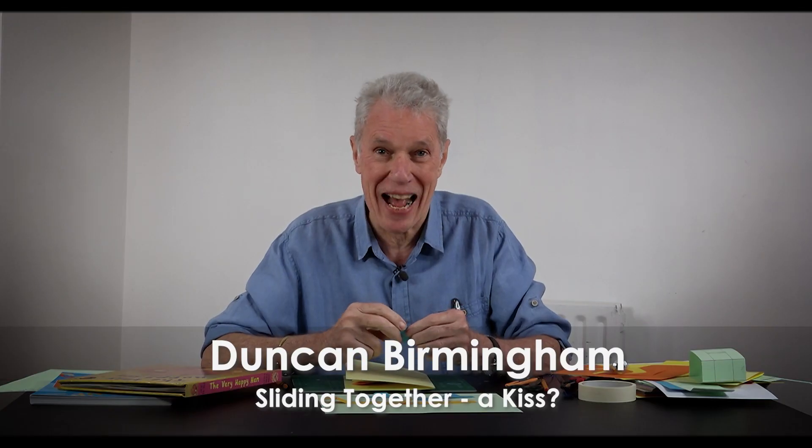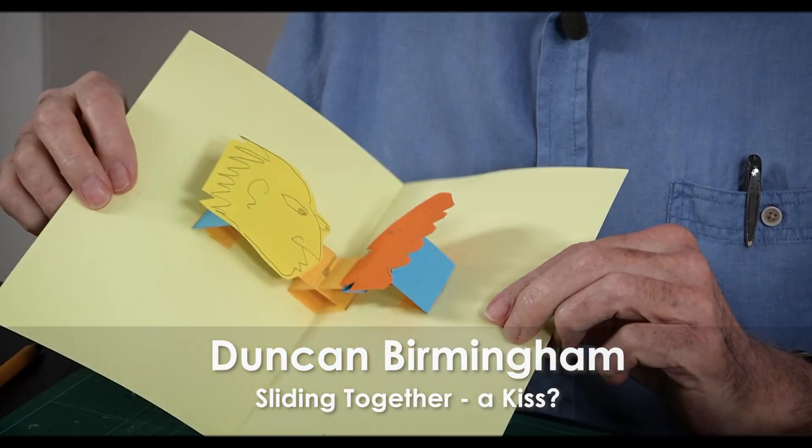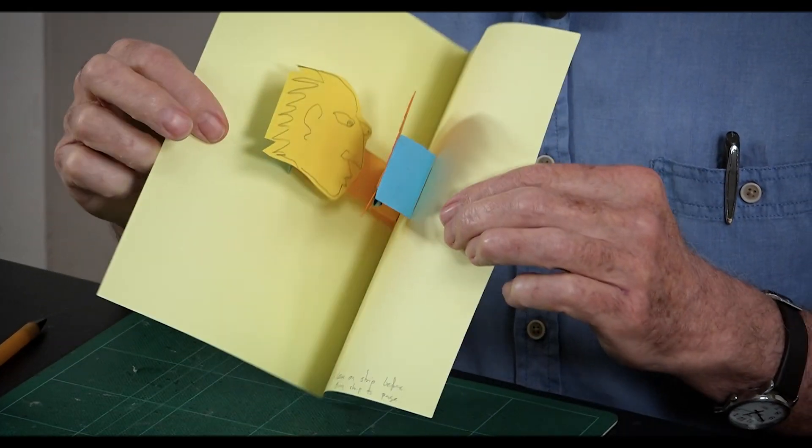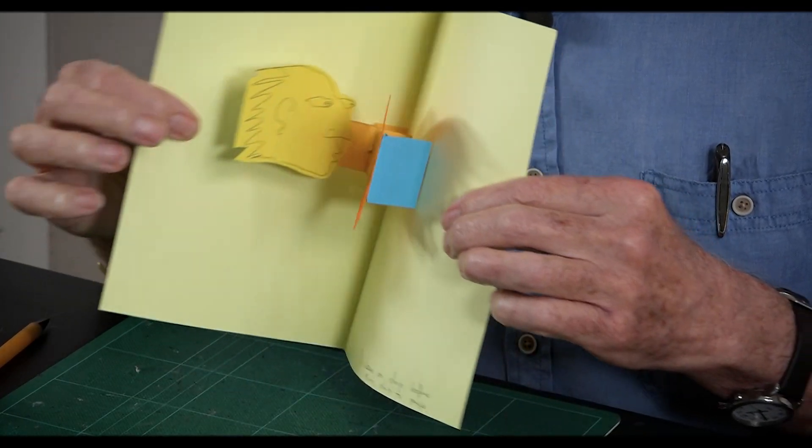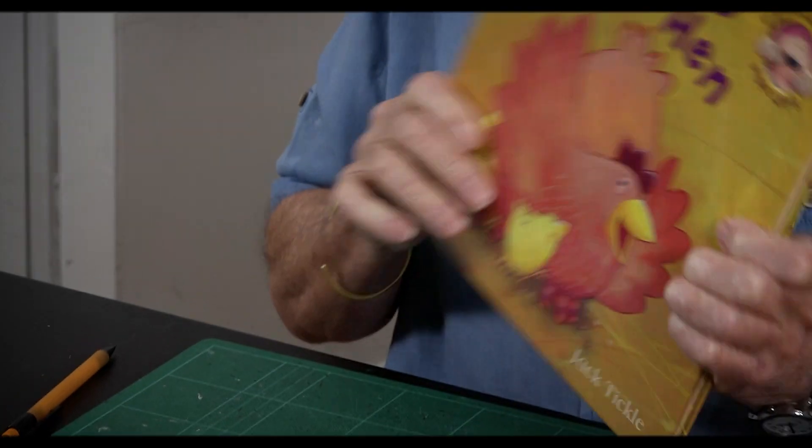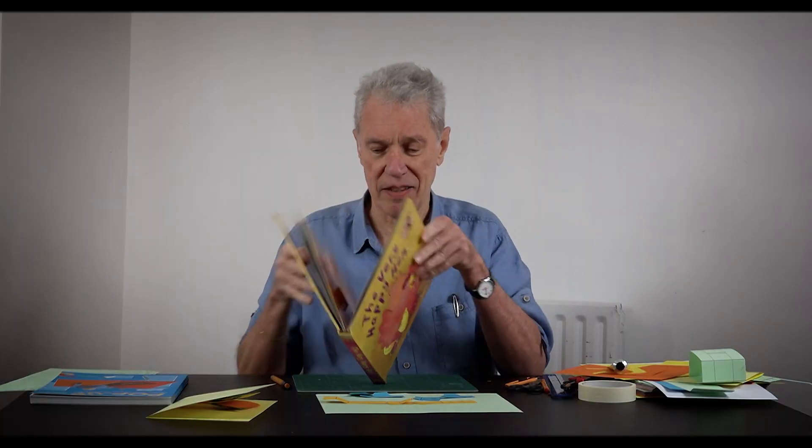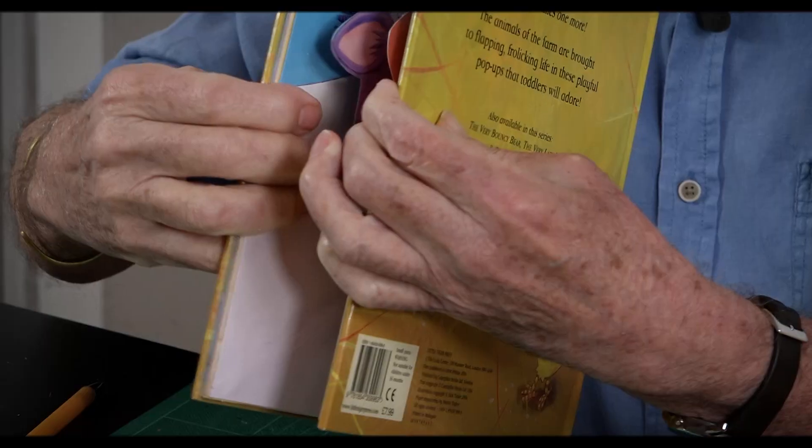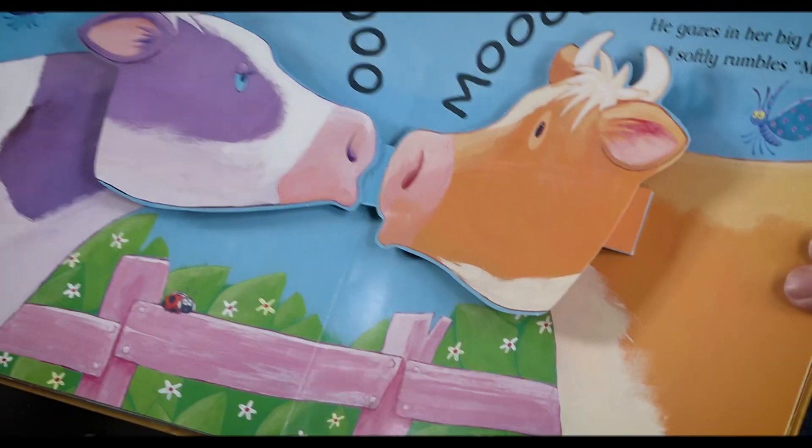Hello, hello, we're back. This tutorial is about using parallelograms and sleeves so you can create sliding motion. Here we've got a kiss or an argument or something like that. This is taken from the book The Very Happy Hen by Jack Tickle. Inside there are these two cows, and as you can see they come together very nicely.